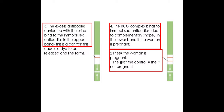On the stick there will also be excess mobile antibodies, and these will be carried up the stick with the HCG-antibody complex to the upper band. Here the HCG complex will bind to the immobilized antibodies — immobilized means they cannot move — and due to their being complementary in shape, the band will show up and change the dye.